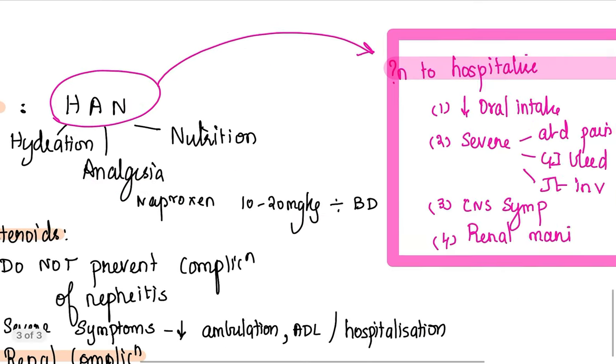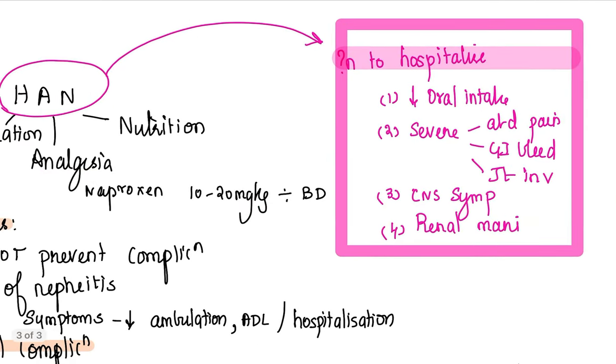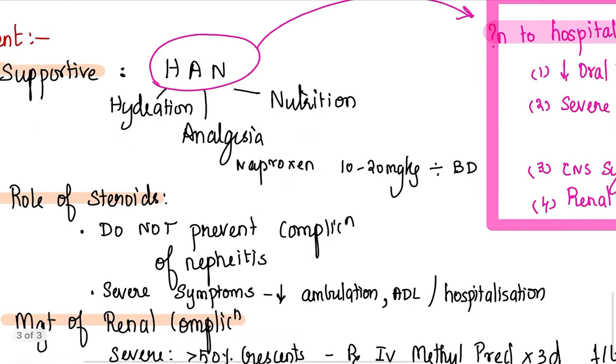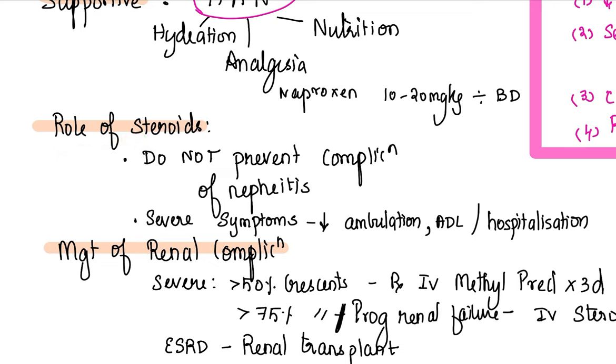When will you hospitalize a patient of Henoch-Schonlein purpura? You need not hospitalize every patient. If the patient is not able to take orally, has severe abdominal pain, GI bleeding, joint involvement with altered sensorium, there are renal manifestations that you find on your OPD visit—it could be hematuria, it could be hypertension, or you do a urine analysis and you find significant proteinuria—then in that case, hospitalize and you take care of supportive management.